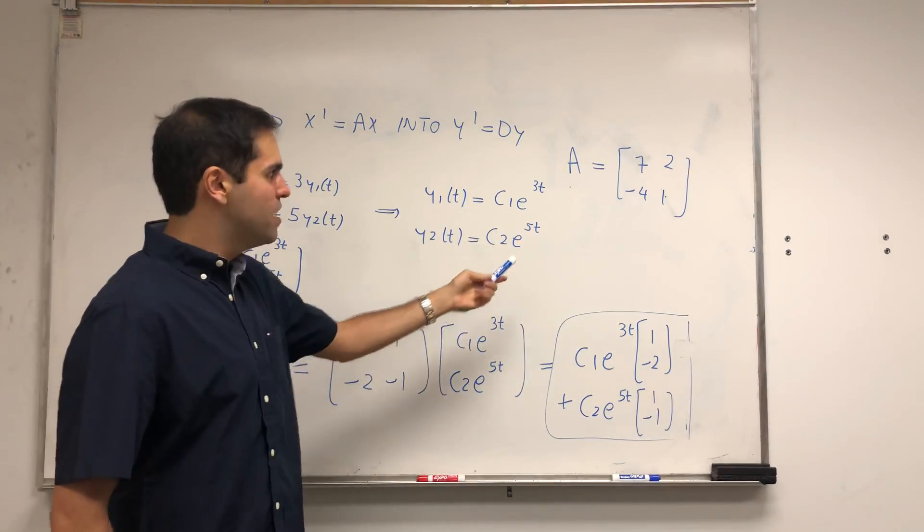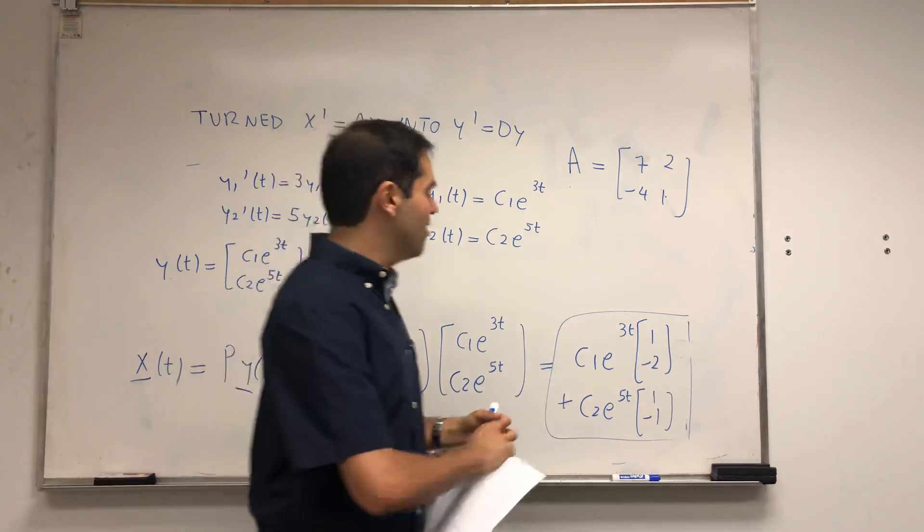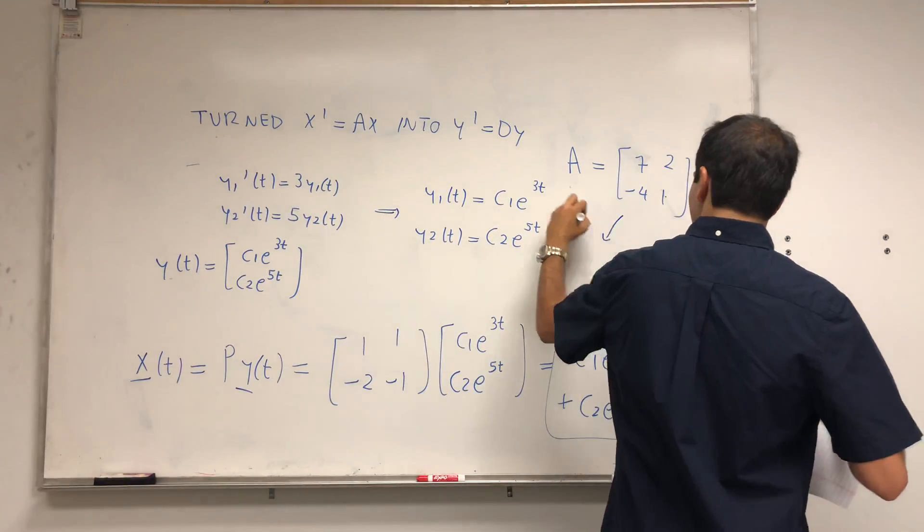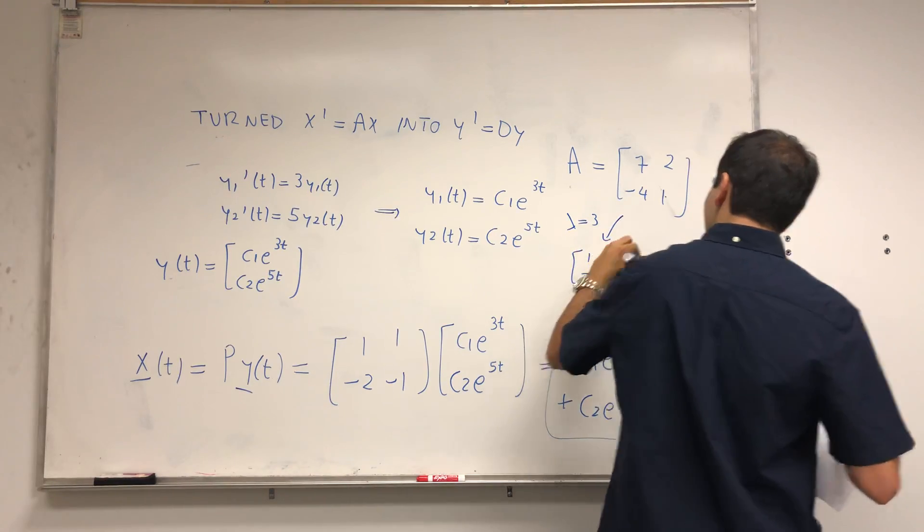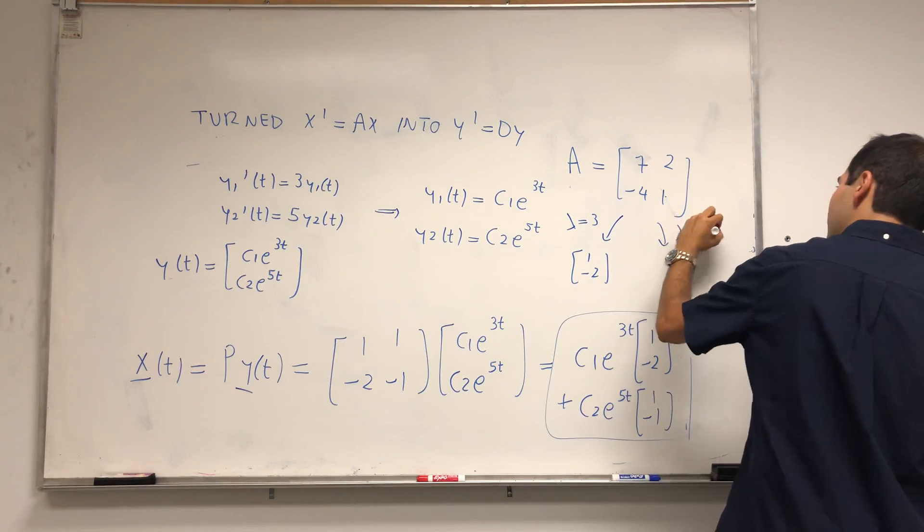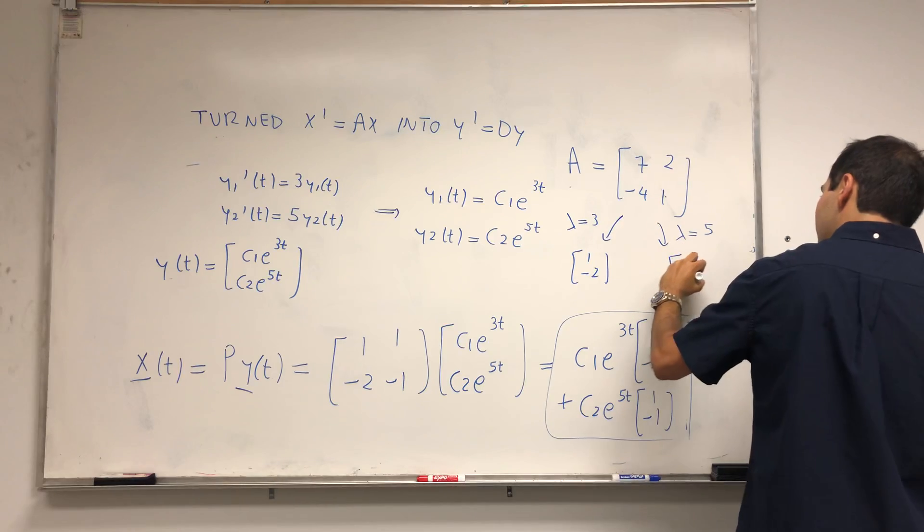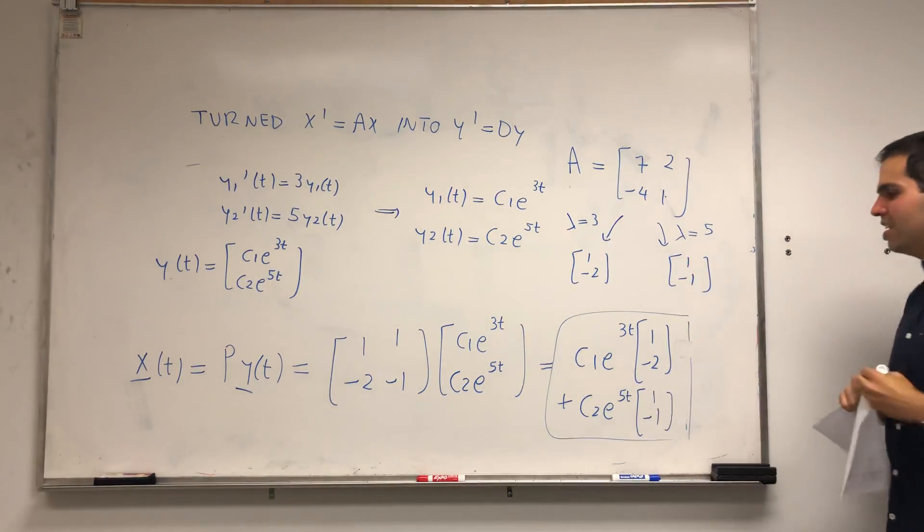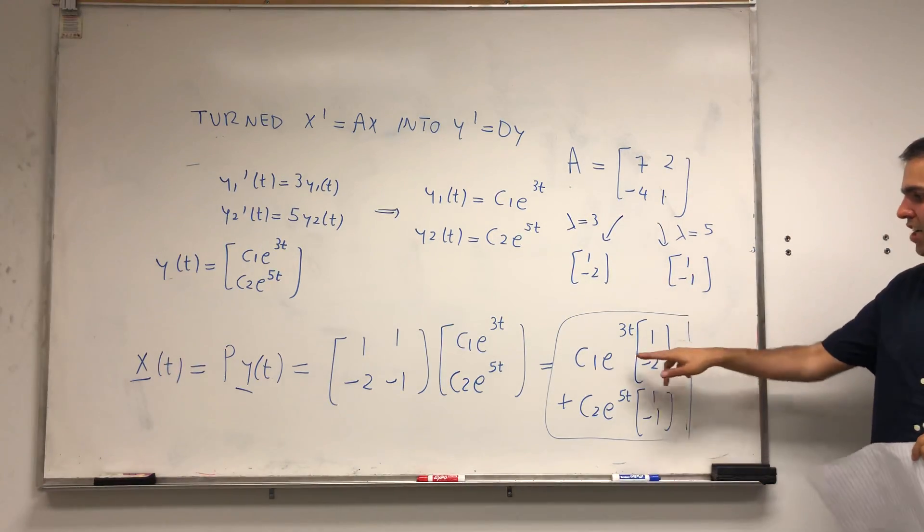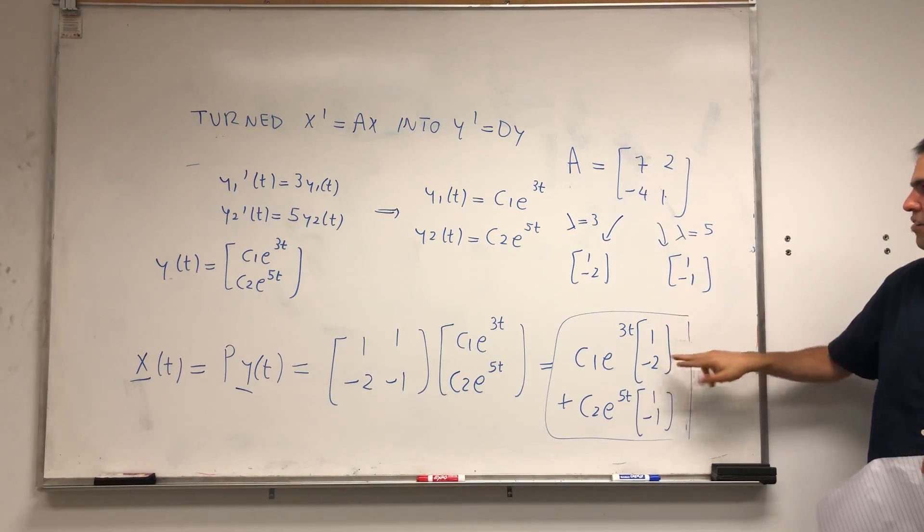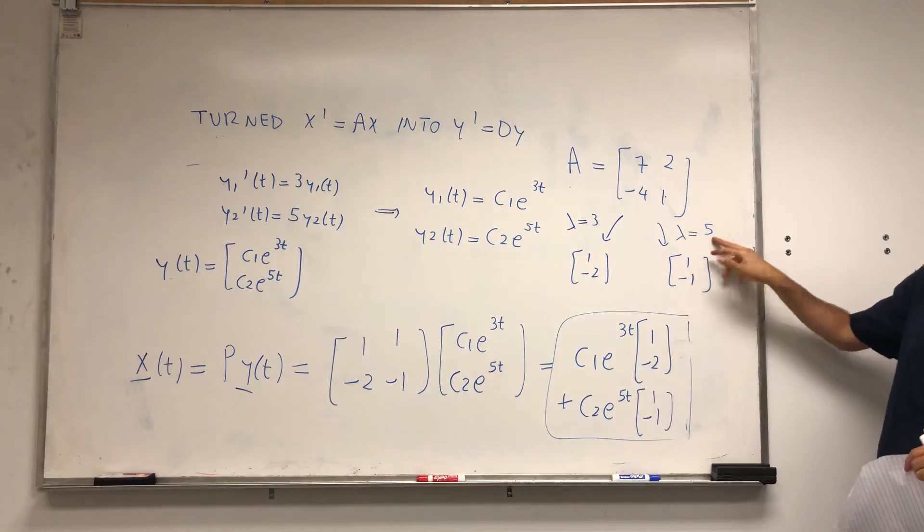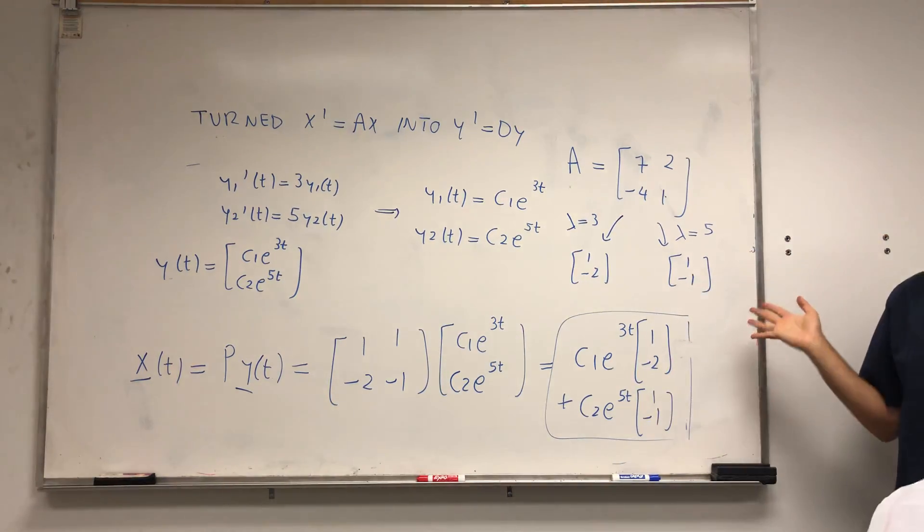To solve x prime equals Ax, diagonalize this matrix. For lambda equals 3, you get the vector [1, -2]. For lambda equals 5, you get the vector [1, -1]. And your solution is just e to the eigenvalue t times eigenvector plus e to the eigenvalue t times eigenvector.